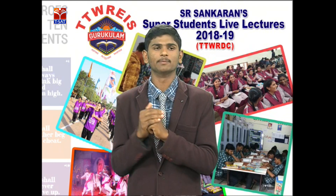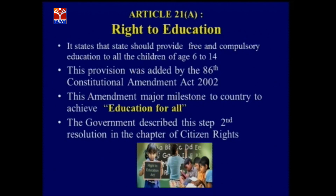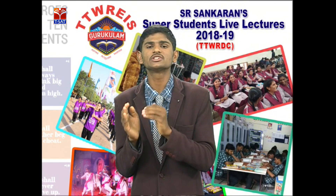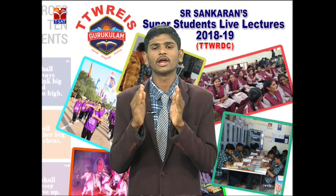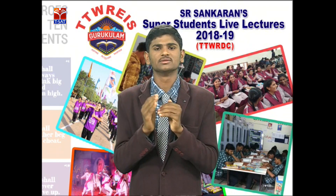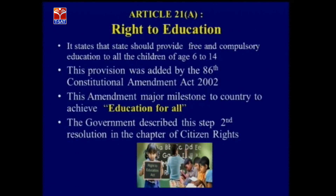Article 21A states the right to education — the state should provide free and compulsory education to all children aged 6 to 14. Anganwadi institutions are maintained as part of Article 21A, providing education and nutritious food to children. This provision was added by the 86th Constitutional Amendment Act 2002, described as a major milestone to achieve education for all.